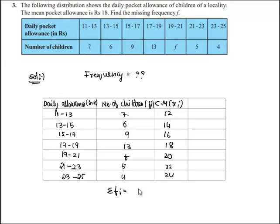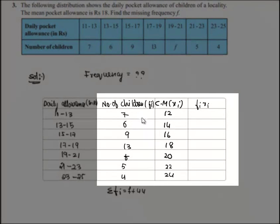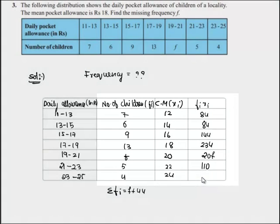Now we shall find the product of fi and xi. 7 times 12 equals 84, then 84, 144, 234, f times 20 equals 20f, 110, and 96. The sum of fi xi is 20f plus 752.